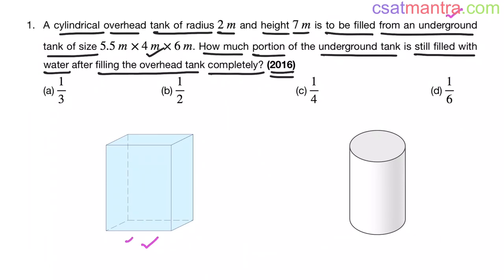Cuboid, my friends. Length into breadth into height — when three sides are different, we call that a cuboid. When three sides are the same, L equal to B equal to H, we call it a cube. Kindly remember this.